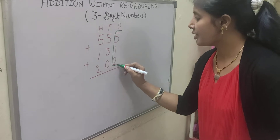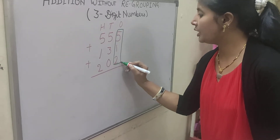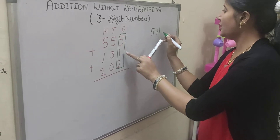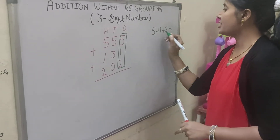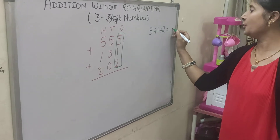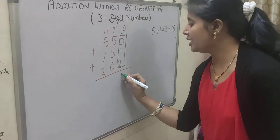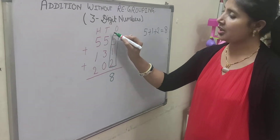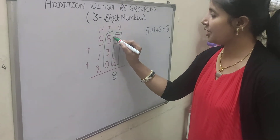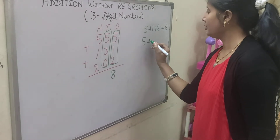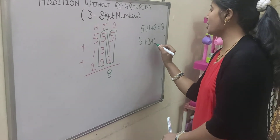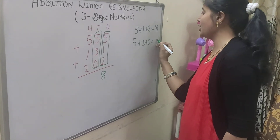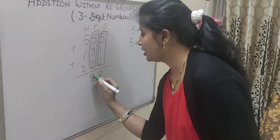Add the digits in the 1s place. We have 5, then 1 and 2. 5 plus 1 is 6, and 6 plus 2 is 8. So write 8 here. Now we have to add the 10s place digits: 5 plus 3 plus 0. 5 plus 3 is 8, and 8 plus 0 is 8. So write 8 here.